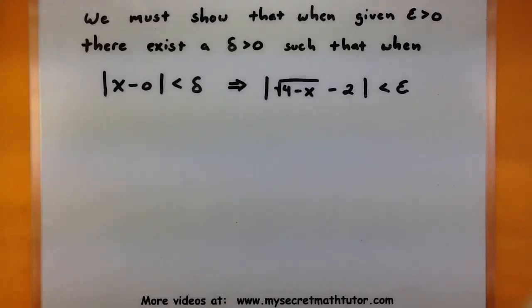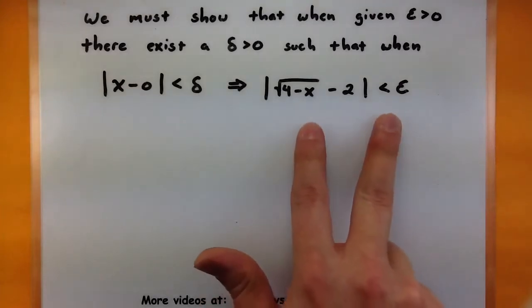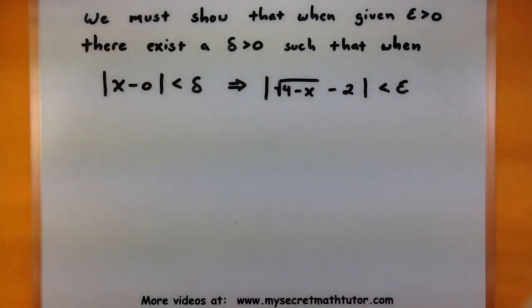Remember this is just a way of saying that if I choose x values close enough to 0, it will force my function to be within some epsilon of the value of 2.